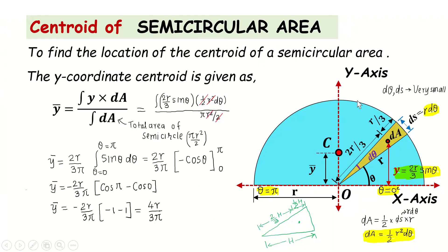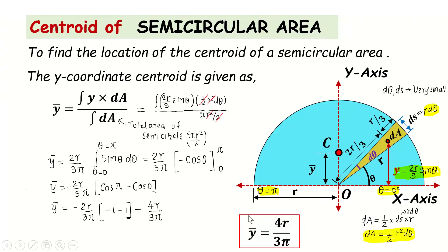So we have got the y-coordinate of the centroid as y-bar = 4r/(3π). Following this simple procedure you can easily find out the centroid of a semicircular area. Thank you very much.